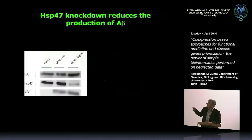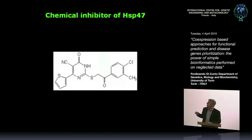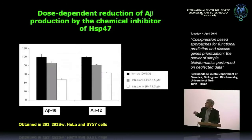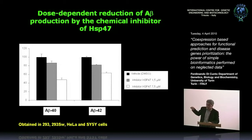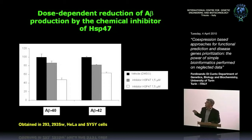We investigated HSP47 deeply. The gene is expressed in neurons, is co-modulated with APP, and accumulates in amyloid plaques with quite specific patterns. Performing RNAi of this gene, we were able to reduce the production of beta-amyloid peptides. There were also known chemical inhibitors that block this molecule's ability to fold collagen chains, and these compounds also decrease beta-amyloid production. Overexpression of HSP47 counteracts the inhibitor effect, suggesting the result is specific. By educated guessing from the co-expression candidate list, we identified a very interesting candidate.